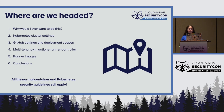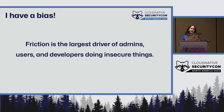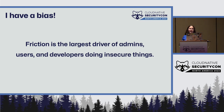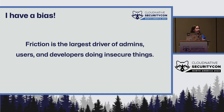Across the spectrum of container adoption maturity, this is a really weird use case. I want to be upfront: I have a bias, and throughout my career I have continually confirmed it. Friction — the force of resistance between two parties — is the leading cause of users, administrators, and developers doing insecure things. Eliminating any and all friction when any security concern is involved will inherently lead to proportionately fewer insecure things.